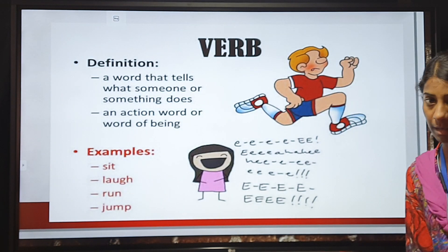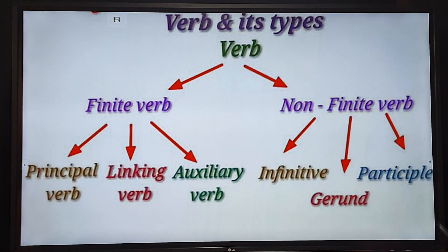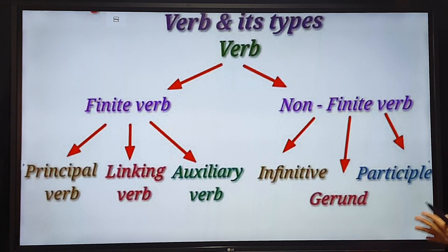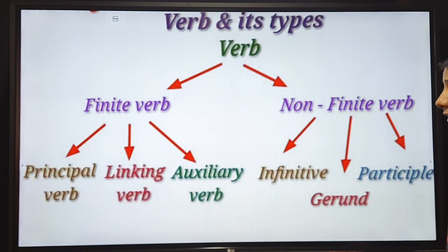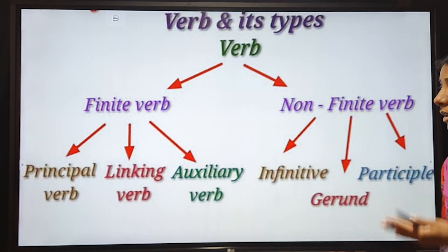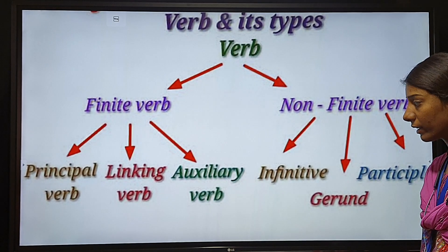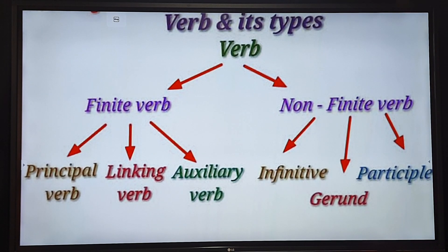Now, verbs and their types. Verbs are divided into two kinds: finite verb and non-finite verb. Finite verb means principal verb, linking verb, and auxiliary verb. Non-finite verb means infinitive, participle, and gerund.